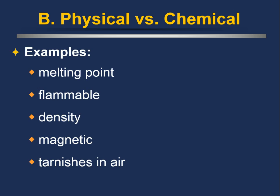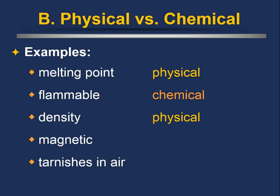Let's look at some examples. Melting point — the point at which something changes from a solid state to a liquid state — is a physical change. Solid water (ice) changing into liquid water is still H₂O; the identity has not changed. Flammability is a chemical property because in order to observe whether something is flammable, you need to set it on fire, and once you burn something you're causing a chemical change in its identity. Density is a physical property — you can measure it by putting something on a scale and it does not change the nature of the substance.